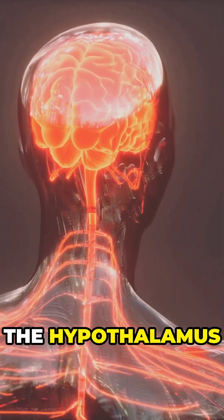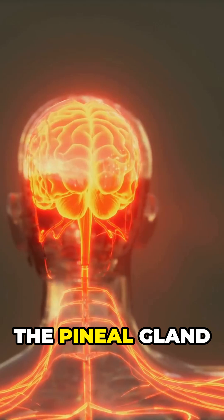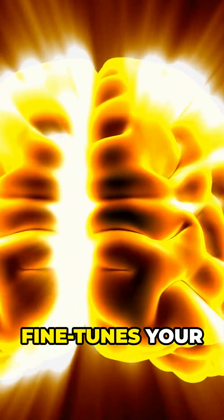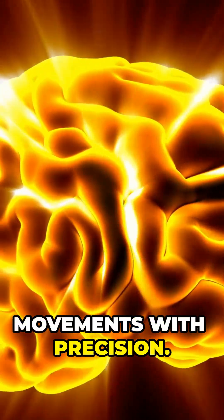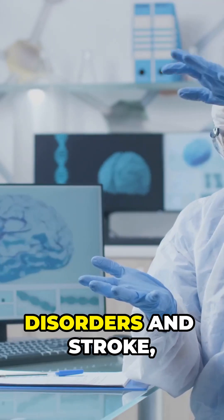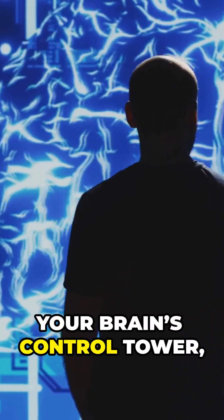The hypothalamus regulates heat, stress, and hormones. The pineal gland sets your sleep rhythm with melatonin. The subthalamus fine-tunes your movements with precision. According to the National Institute of Neurological Disorders and Stroke, the diencephalon is your brain's control tower.